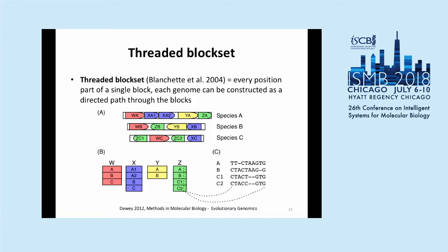The general representation of a whole genome alignment relies on a subunit called a block — a nucleotide-level alignment matrix for some set of collinear and homologous sequences. Here's an example: a slice of an alignment block of the Sonic Hedgehog gene in humans shown in the UCSC genome browser, with a bunch of vertebrate species aligned to that same place in the human genome. A whole genome alignment is a collection of these blocks. One useful notion is the threaded block set, introduced by Blanchette in 2004 — a set of blocks where every position in every genome is represented in exactly one block, and each genome can be constructed as a directed path through a set of blocks.